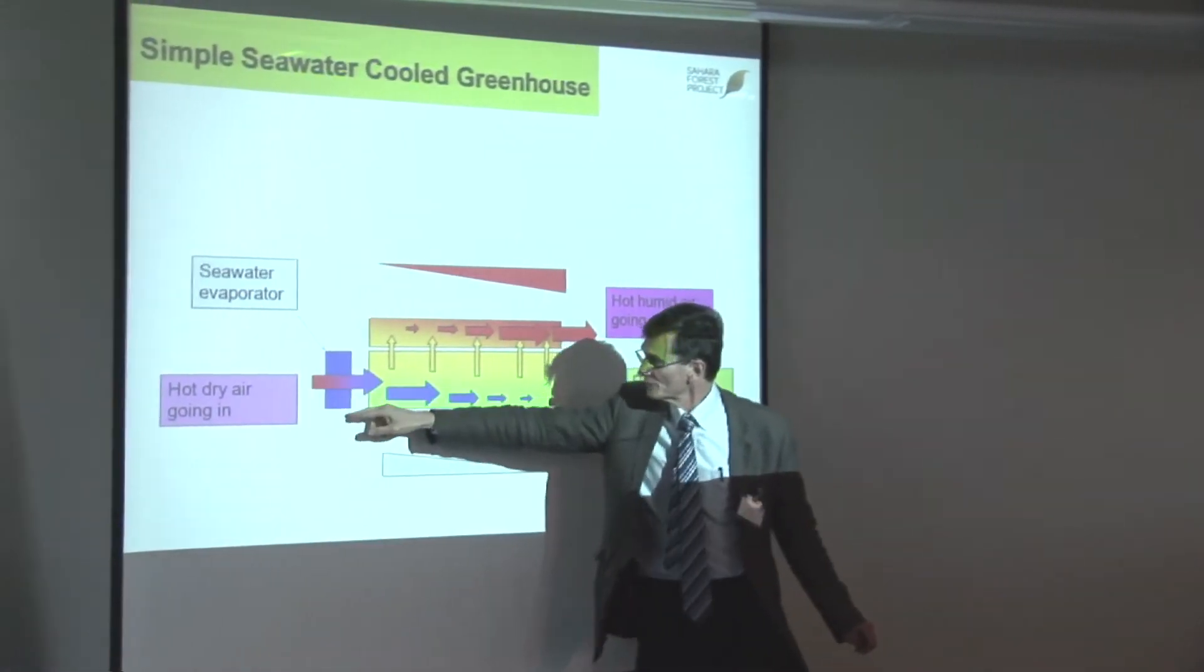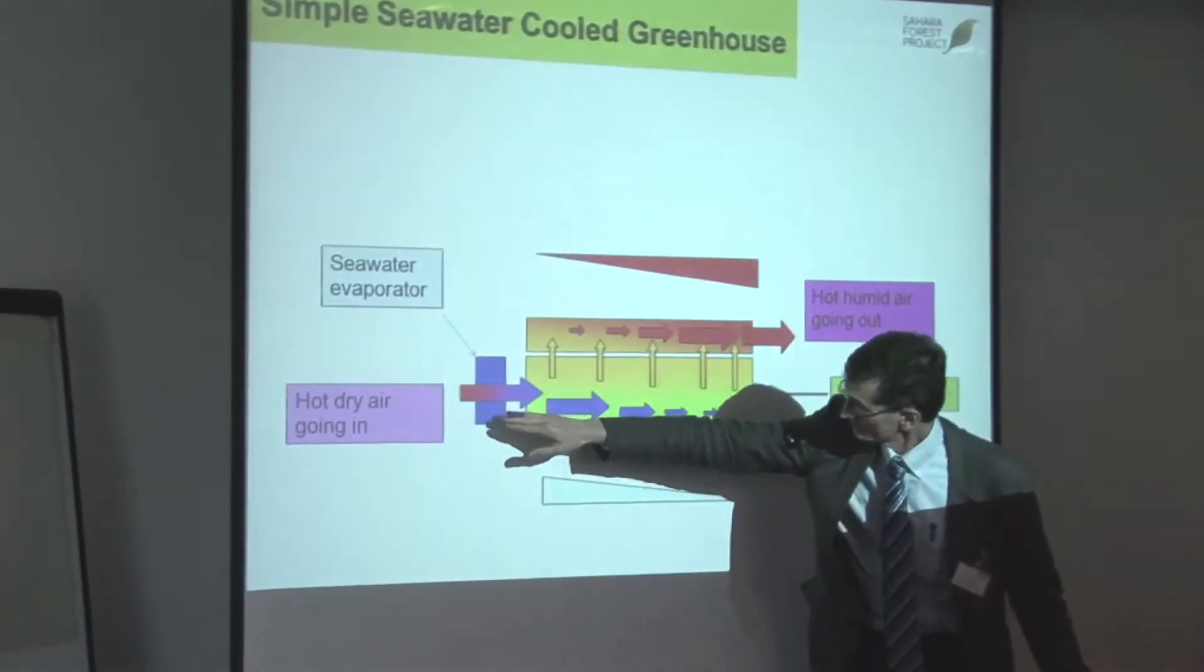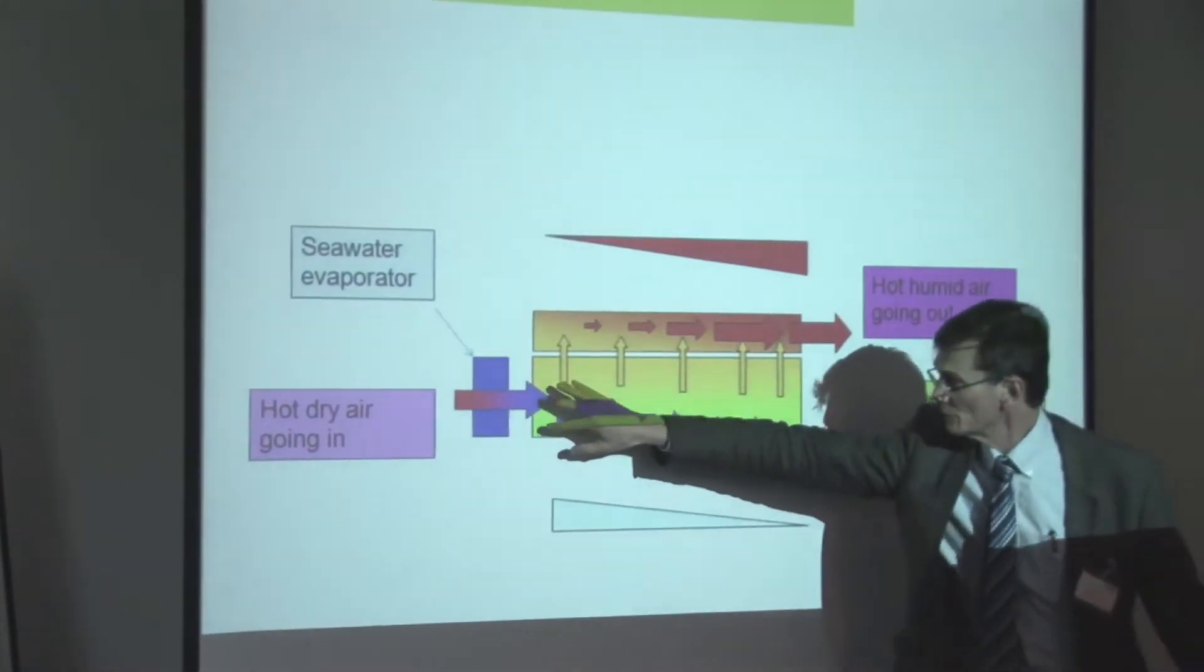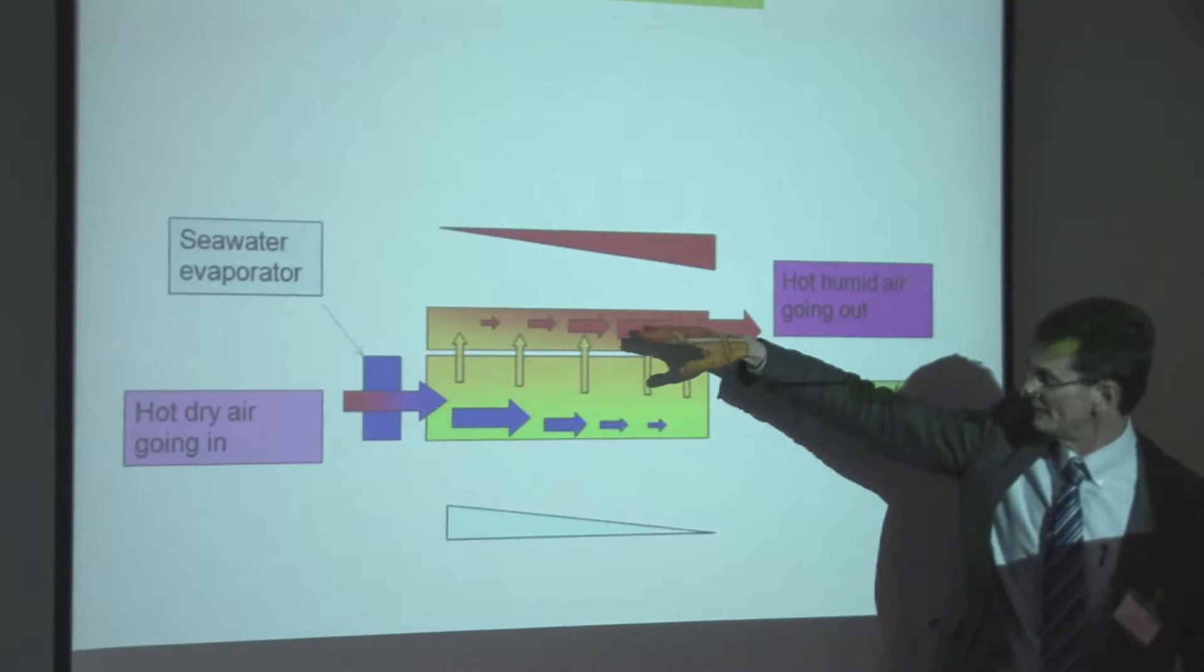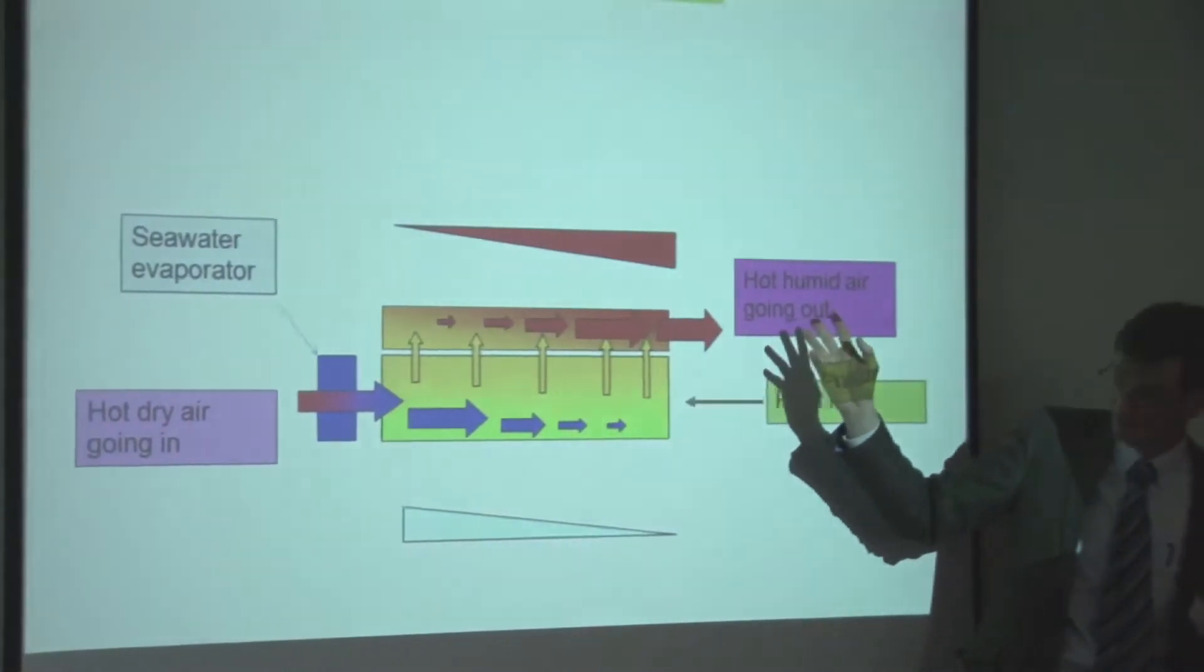If you run water over this Munters pad, pull air through, and your crop line is here. The air heats up and exhausts hot, humid air.